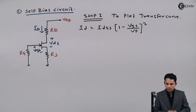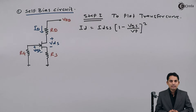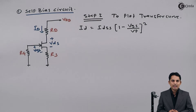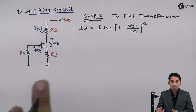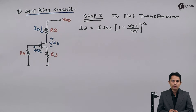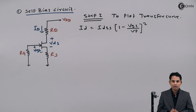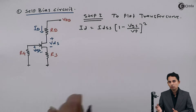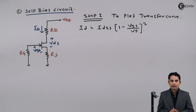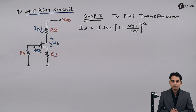In order to plot the transfer characteristics or transfer curve, we require a minimum of 4 points, as it is not a straight line. If it were a straight line, we would require only 2 points. As it is a parabolic curve, we require minimum 4 points. We will have a particular table for that.